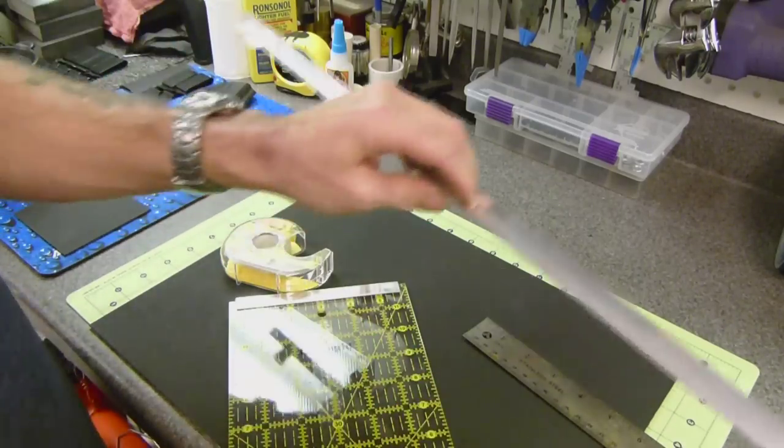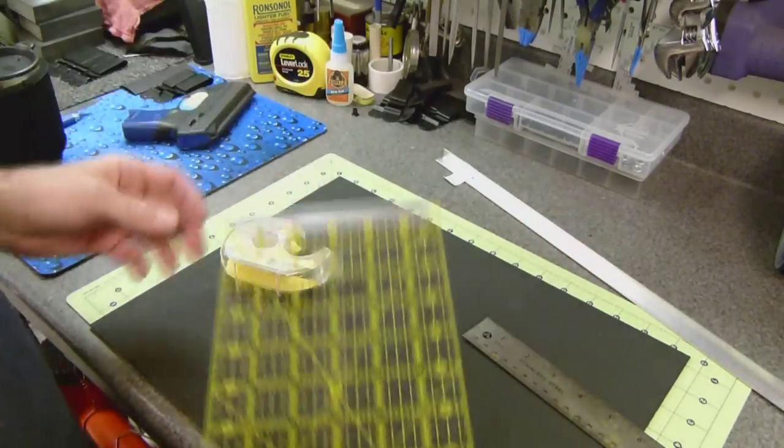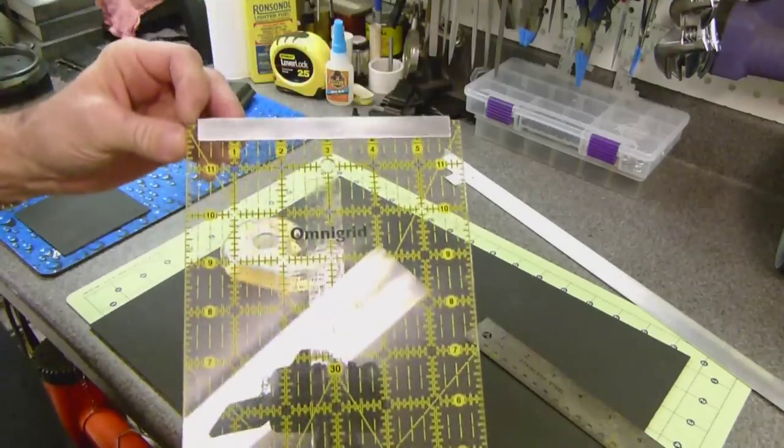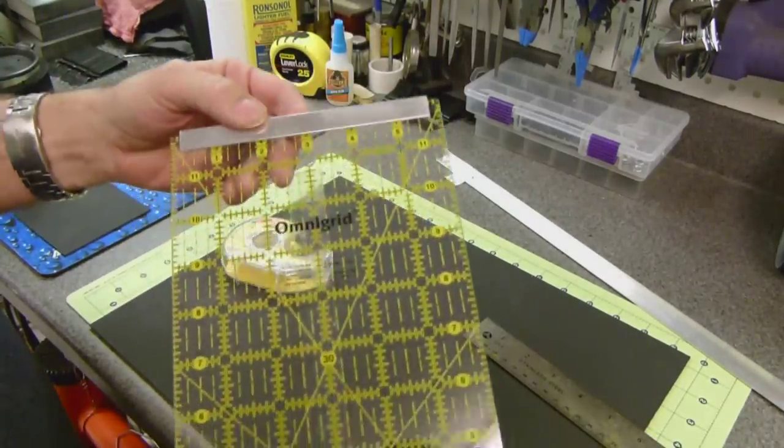Lowe's, Home Depot, whatever you have. I cut it down to be a quarter inch from the edges of the rule.